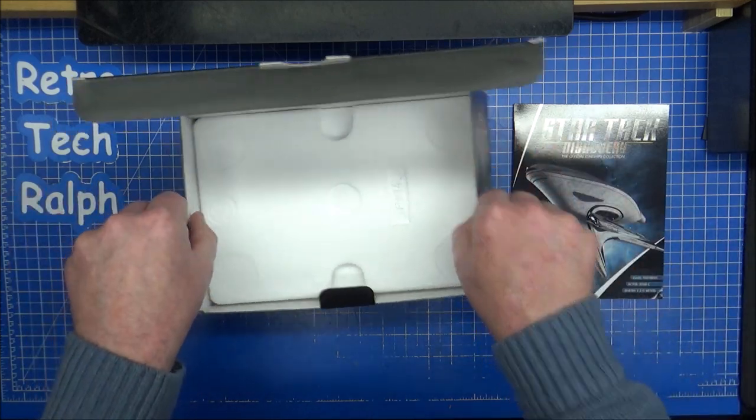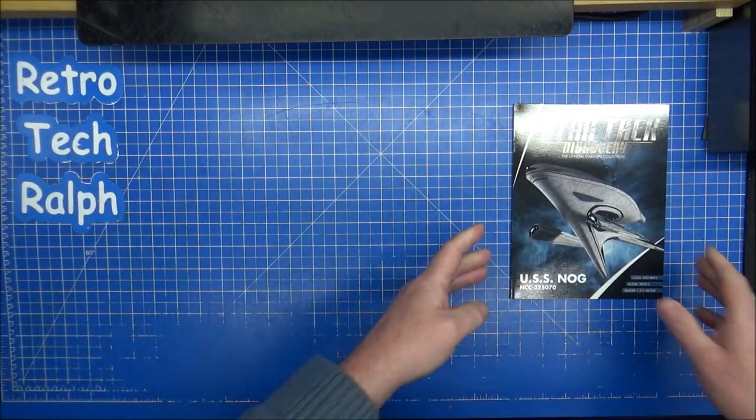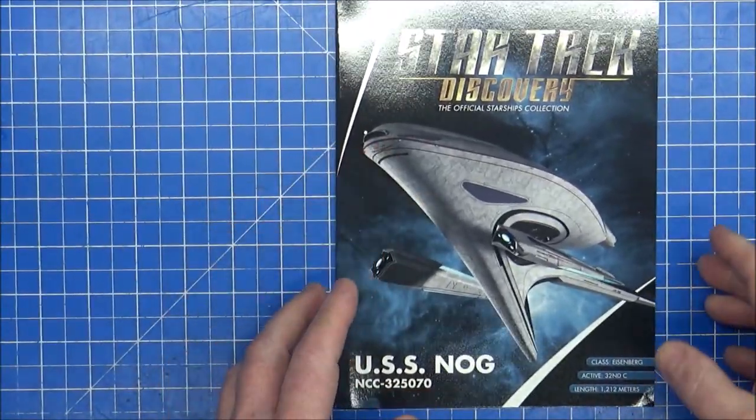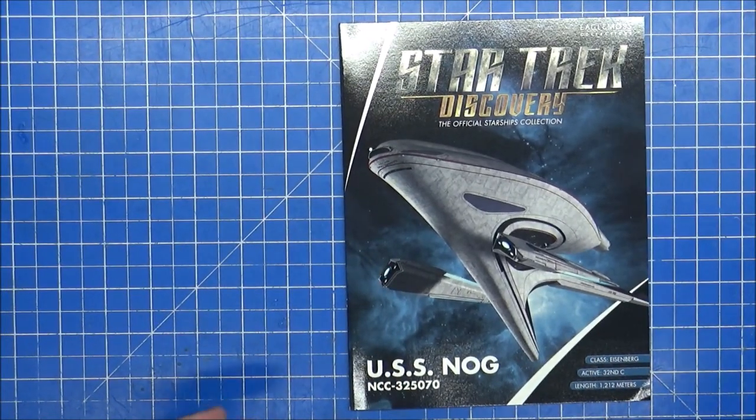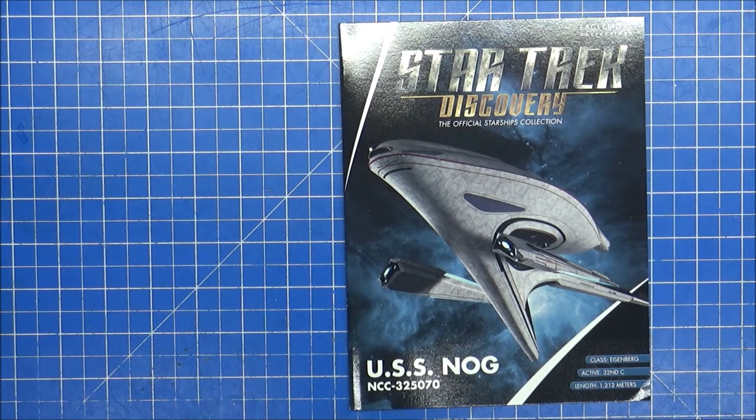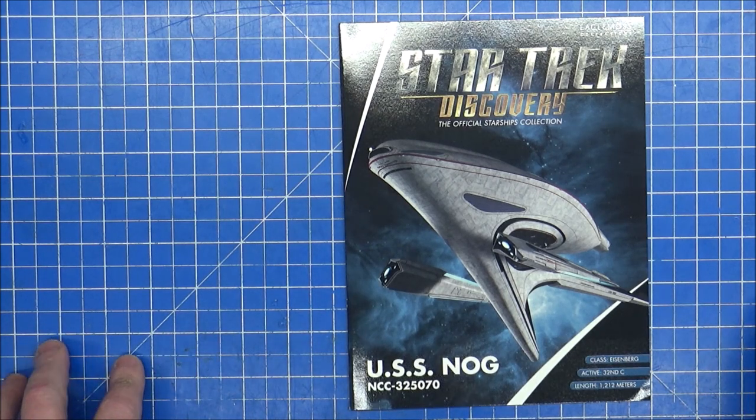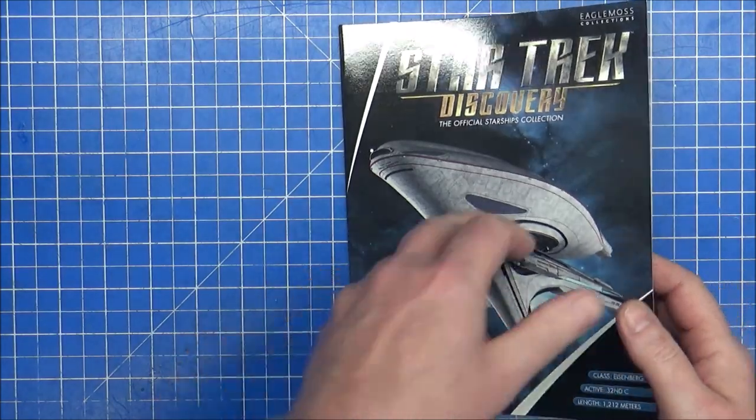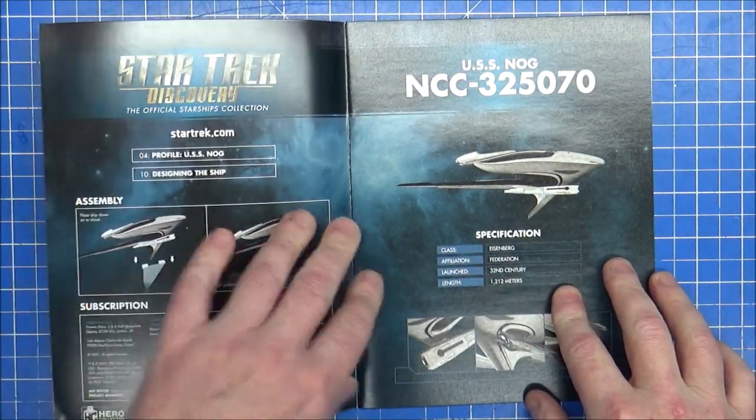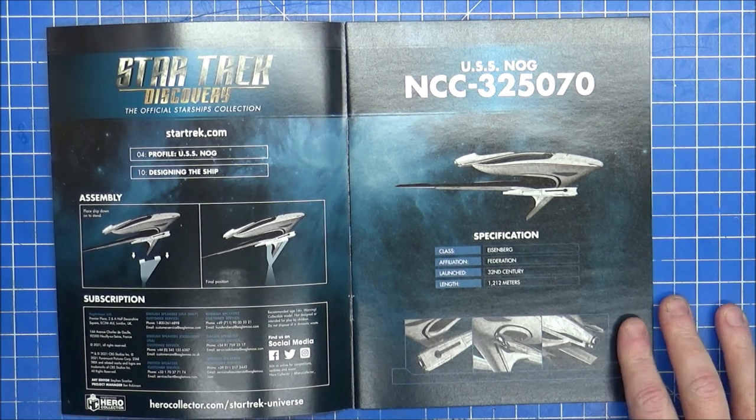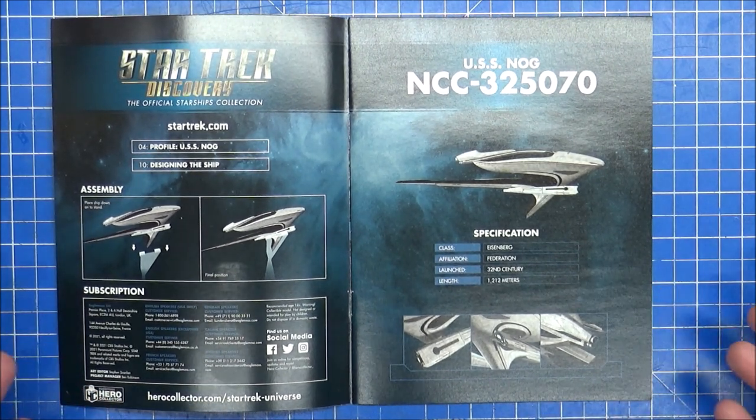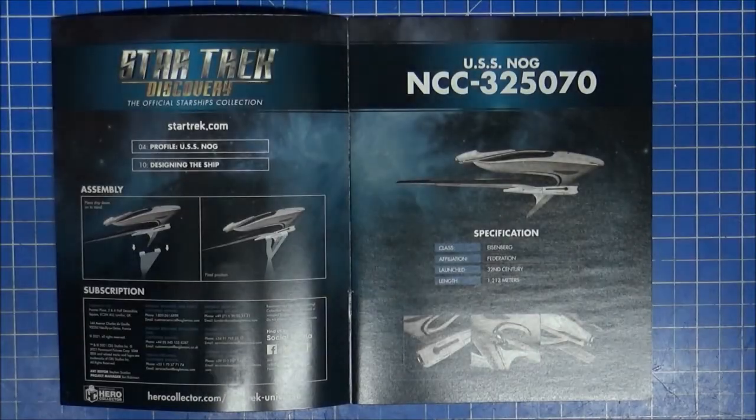But I bought two in the latest sale, and that's going to be looked at in a moment. So as I usually do, or did at least, let's get on with the model. USS Nog, NCC-325-070. This is obviously the Eisenberg class after the character of Nog, and the actor who played him in Deep Space Nine, which is an absolutely massive nod to him.